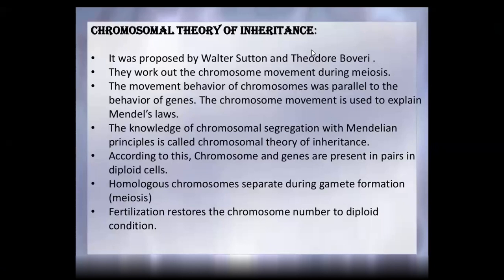Next is the chromosomal theory of inheritance. The chromosomes are in the nucleus, and the nucleus is within the entire cell. With the advancements of the microscope, this theory was first proposed by Sutton and Bovery — Walter Sutton and Theodore Bovery.